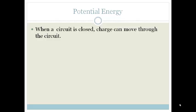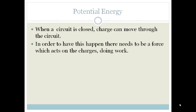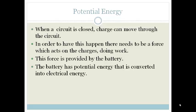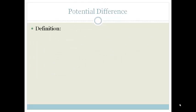When a circuit is closed, charge can move through the circuit. In order to have this happen, there has to be a force that acts on the charges doing work. This force is provided by the battery. The battery has potential energy, actually a chemical potential energy, that's converted into electric energy that allows the charge to move around the circuit.